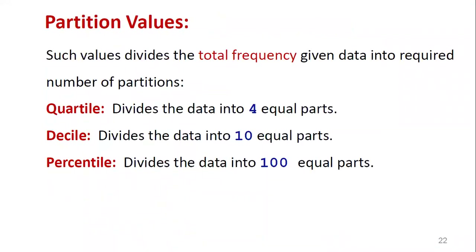Now we move to our next concept — partition values. Partition values divide the dataset into different sub-parts. Such values divide the total frequency of given data into a required number of partitions. By default, partitions are: quartile (divides data into 4 equal parts), decile (divides data into 10 equal parts), and percentile (divides data into 100 equal parts).